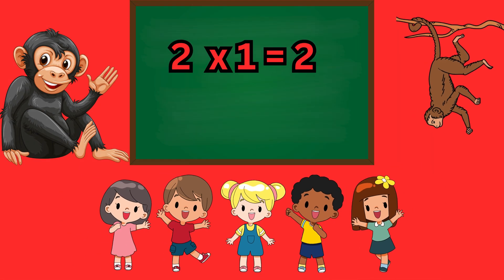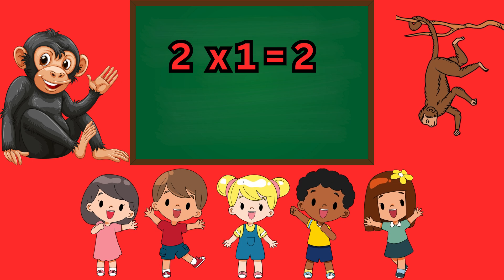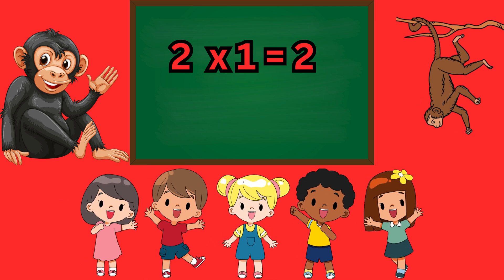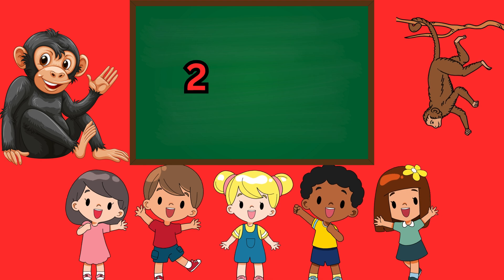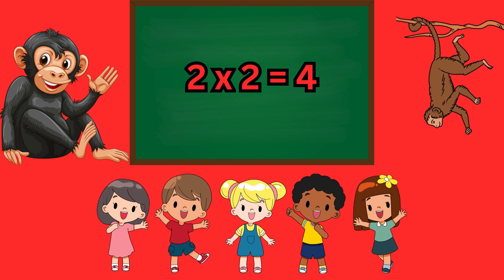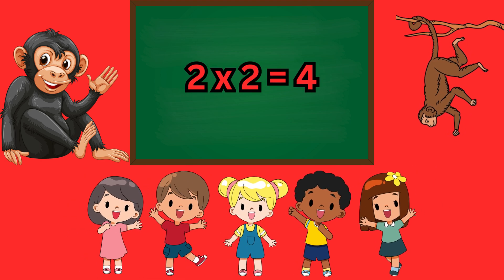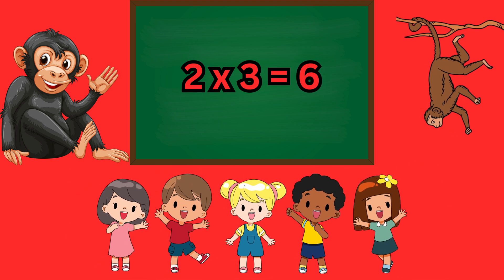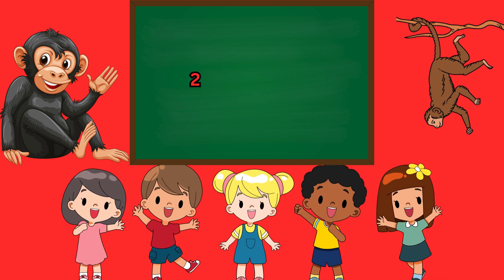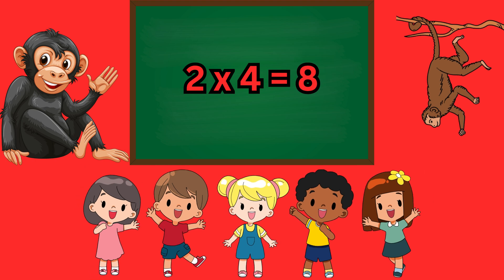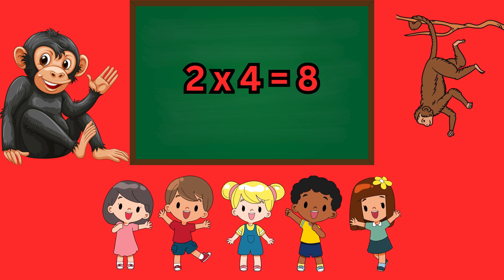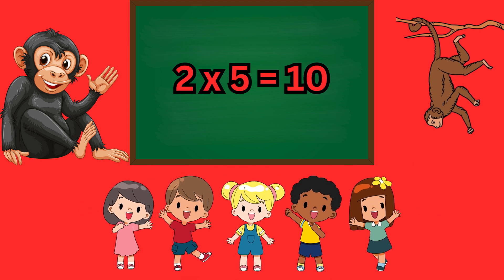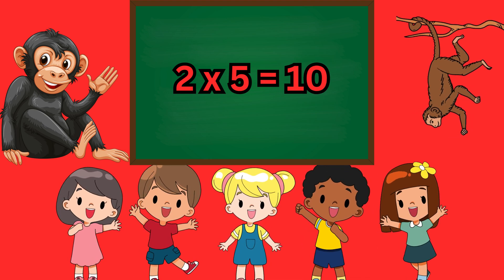Table of 2. 2 one's a 2, 2 two's a 4, 2 three's a 6, 2 four's a 8, 2 five's a 10.